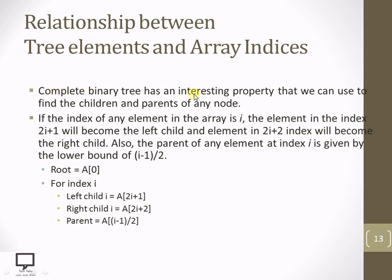A complete binary tree has an interesting property that we can use to find the children and parent of any node. If the index of any element in the array is i, the element at index 2i+1 becomes the left child and the element at index 2i+2 becomes the right child. To find the parent of an element at index i, apply the formula (i-1) divided by 2, which gives the index position of the parent in the array.